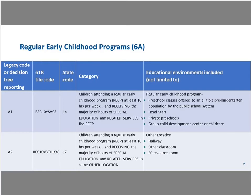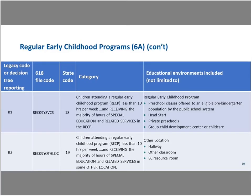These are the same definitions, essentially, but these are for children who are in programs less than 10 hours a week. The category of A1 plus B1 equals what we see in 6A for Indicator 6. Understanding the distinctions between those is important as we look at the data.